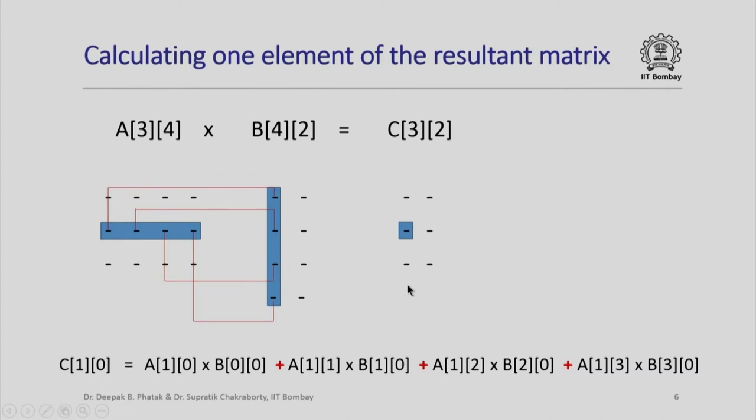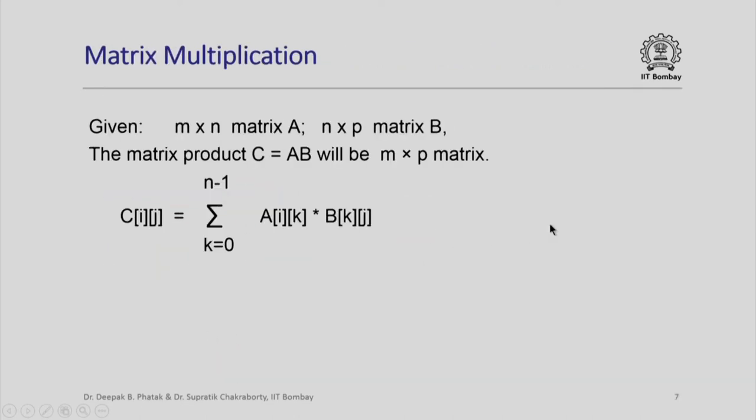Notice that while the matrix multiplication operation is involved logically it is very simple. If I want to calculate the ith row jth column element of C, I need to multiply all elements of ith row of A with the corresponding elements of jth column of B and find the sum that will give me this element. Having equipped myself with this I can now formulate the matrix multiplication problem. If I have an M by N matrix A and N by P matrix B then the matrix product C equal to AB will be an M by P matrix and this is nothing but summation over k equal to 0 to N minus 1: A[i][k] multiplied by B[k][j].